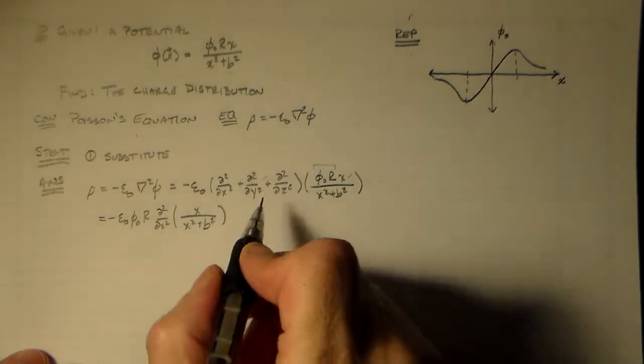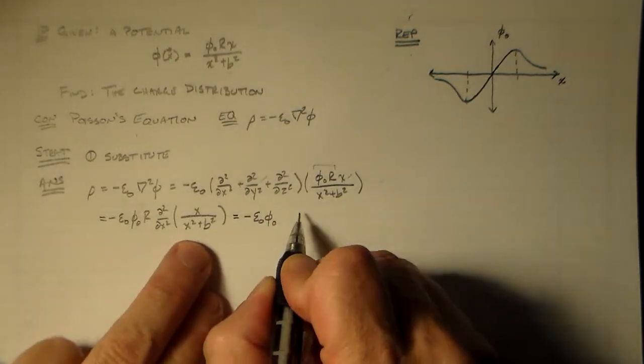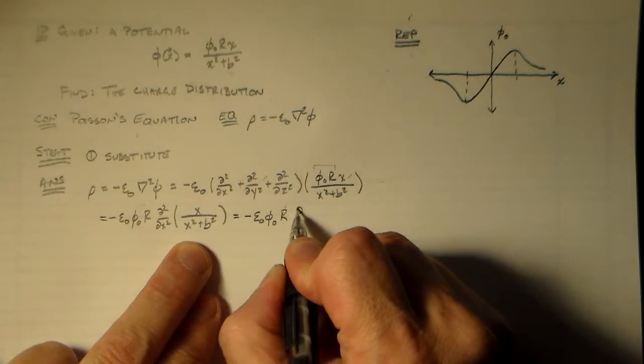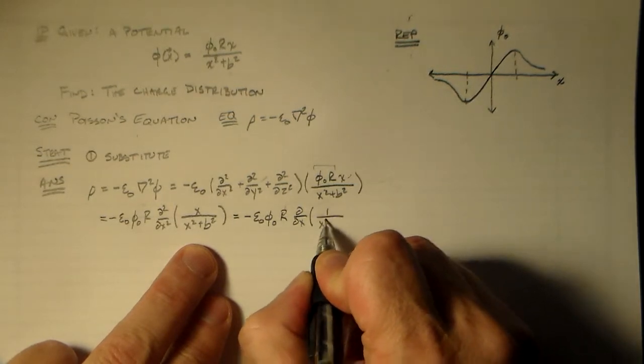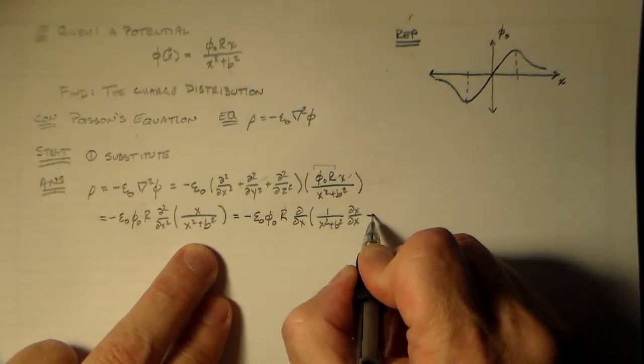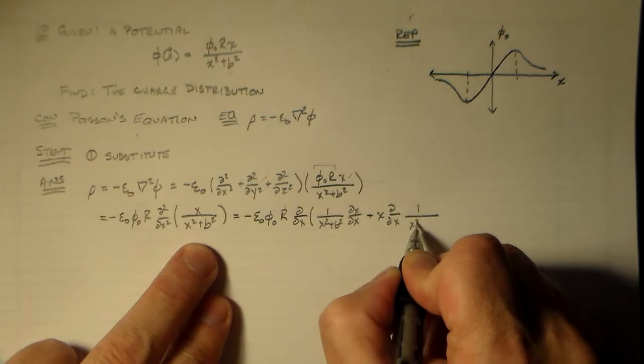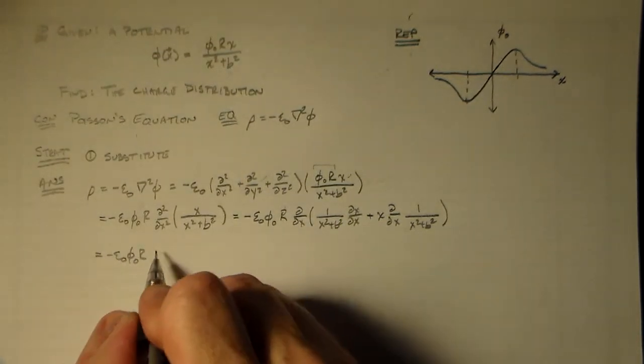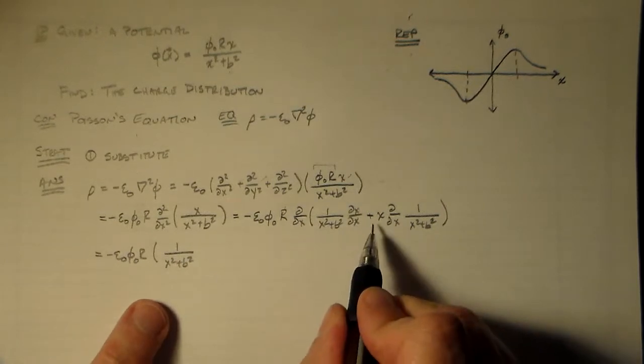So that means we end up with something like minus epsilon naught phi naught r, d squared dx squared, x over x squared plus b squared. So this is a chain rule right away. That means we have minus epsilon naught phi naught r times d dx, 1 over x squared plus b squared, times d dx of x. That's just going to be 1 plus x d dx 1 over x squared plus b squared.